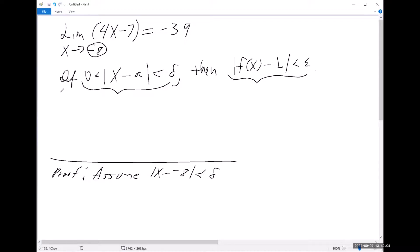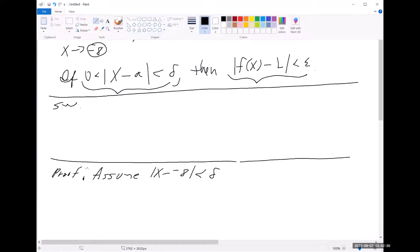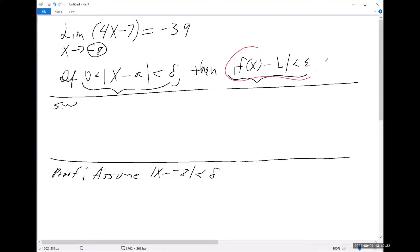So what this question involves, when they say which delta is going to allow us to prove that, it involves some scratch work. And I'm just going to write SW. And so what we're going to do is we're going to work off of the thing that we're trying to accomplish. What are we trying to accomplish? We want to be able to arrive at that answer.